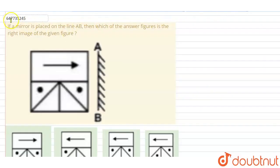Hello everyone, let's solve this question. The question is, if a mirror is placed on the line AB, then which of the answer figures is the right image of the given figure? Look at this figure given. Right side, AB mirror is placed. I will tell you the right image.